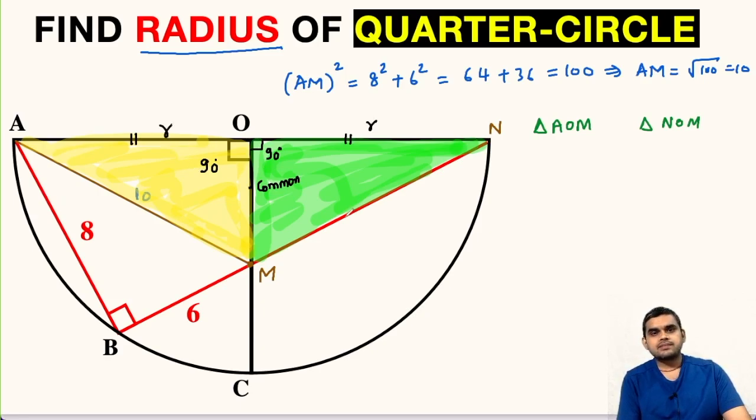So by side-angle-side postulate, we can say that these two triangles are congruent to each other. So if they are congruent, then we know that by the property of congruency, the congruent parts of congruent triangles are equal. So AM will be equal to NM. AM we already found as 10 units, so this length NM will also be 10 units.